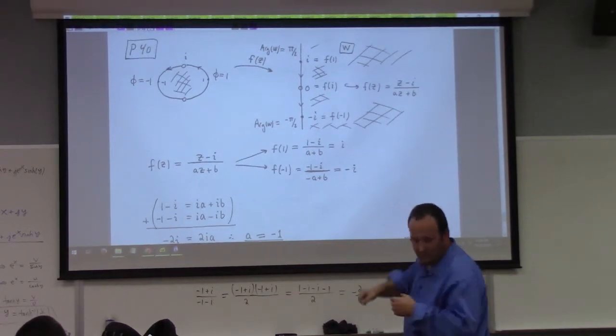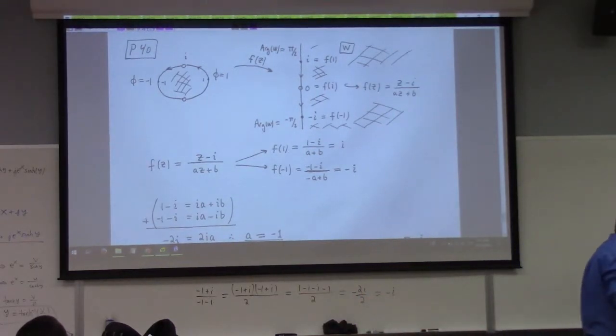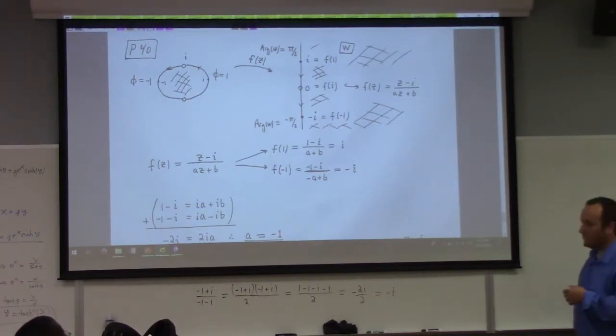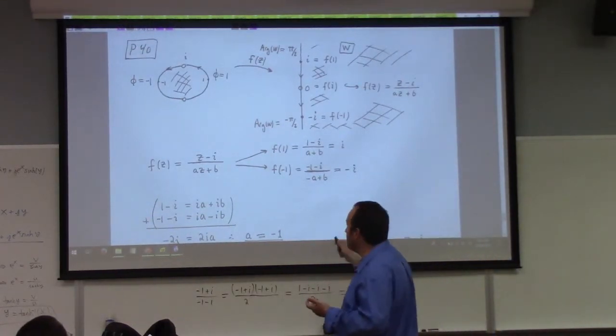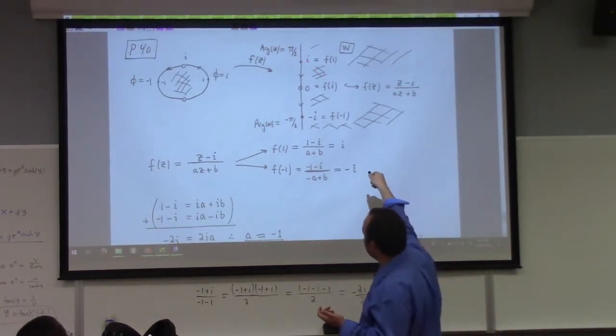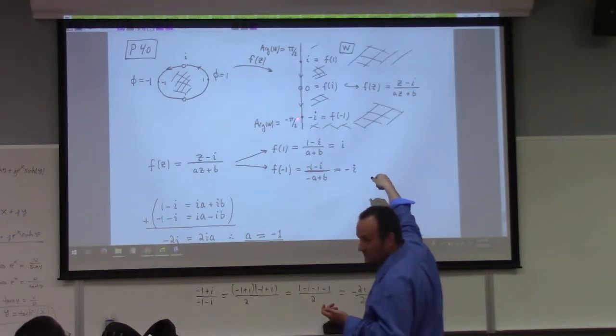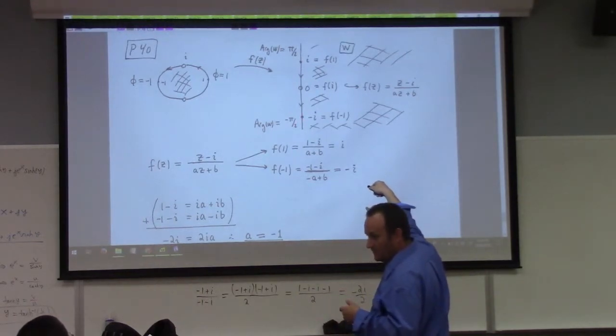Inverse tangent has the very nice feature that it takes pi over 2 as you approach the positive imaginary axis, and you approach minus pi over 2 as you approach the negative imaginary axis, right? As I go up to here, it's pi over 2. As I go down to there, it's minus pi over 2 in terms of inverse tangent of y over x.